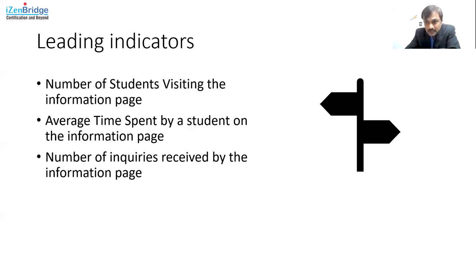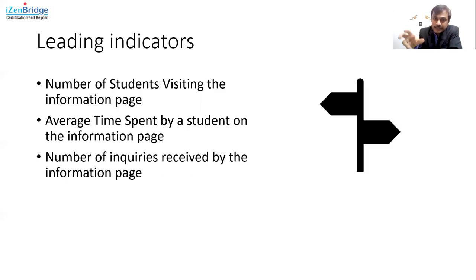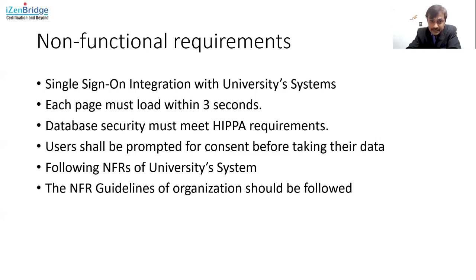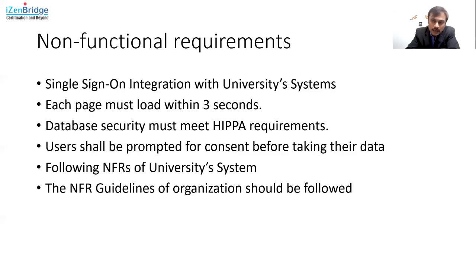If the number of university students coming to our organization increases, then only can we see our market share for the loan product increase, because we are getting people from this particular space. We can also talk about non-functional requirements: single sign-on integration with university systems, loading UI specifics, data security, adherence to the university's non-functional requirement processes, and our organization's general NFR guidelines related to storage, replication, availability, and maintainability. These all need to be mentioned as a section in the EPIC hypothesis statement.